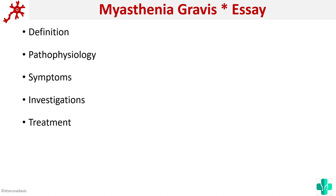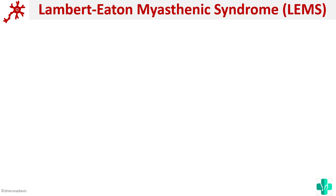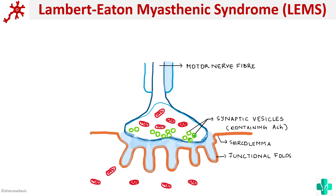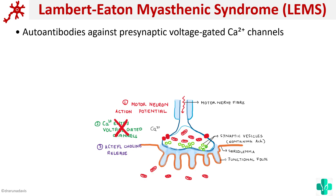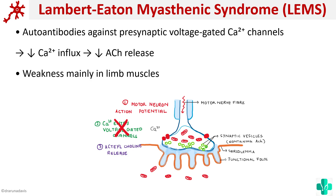Now I would also like to talk about another neuromuscular junction disorder — Lambert-Eaton myasthenic syndrome. In this syndrome, once the motor neuron action potential arrives, calcium enters through voltage-gated calcium channels, which then causes release of acetylcholine into the synaptic cleft. In Lambert-Eaton myasthenic syndrome, the problem is that there are antibodies against these voltage-gated calcium channels. So calcium cannot enter, acetylcholine cannot be released into the synaptic cleft. There are auto-antibodies against the pre-synaptic voltage-gated calcium channels, causing decreased calcium influx and decreased acetylcholine release. In this case, the weakness is mainly in the limb muscles, which are first affected.